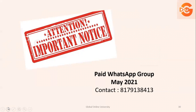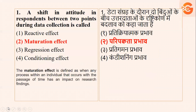So let's not waste time and start with our question-answer session. The first question is about a shift in attitude in respondents between two points during data collection. That is called the maturation effect. Yeh maturation effect hota kya hai — it's a process within an individual that occurs with the passage of time, and jiska effect hota hai research findings peh. So us effect ko maturation effect bola jata hai.